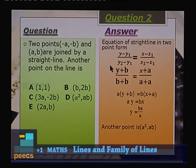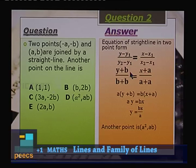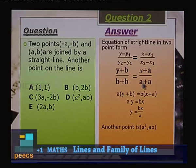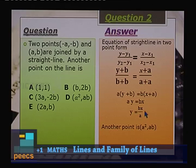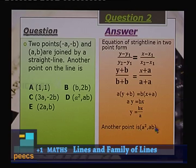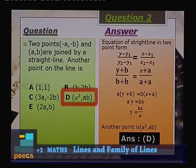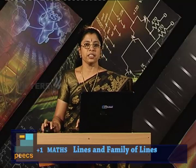Question 2: The points A(−a, −b) and B(a, b) are joined. Using the two-point form, the equation becomes: (y + b)/(2b) = (x + a)/(2a), so a(y + b) = b(x + a), giving ay = bx, or y = bx/a. Substituting candidate point (a², ab) satisfies the equation, so the answer is D.